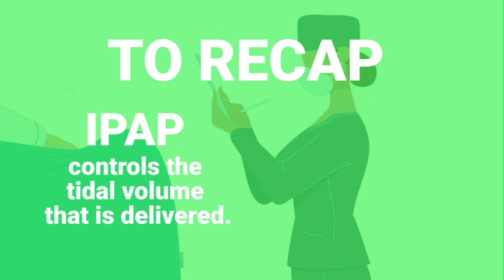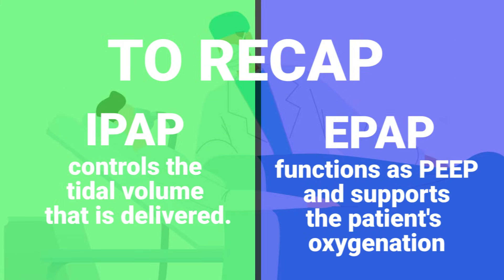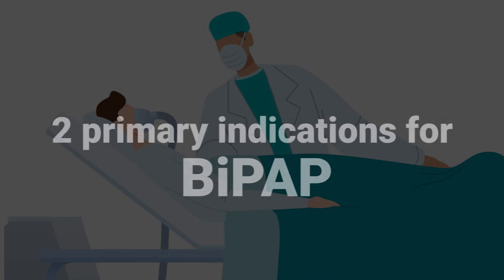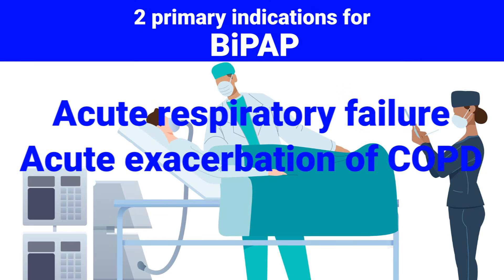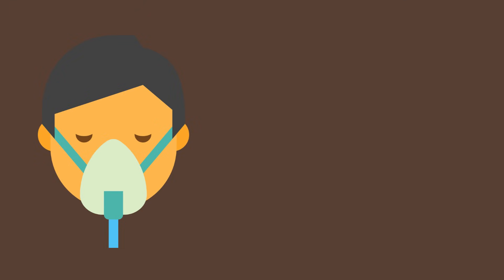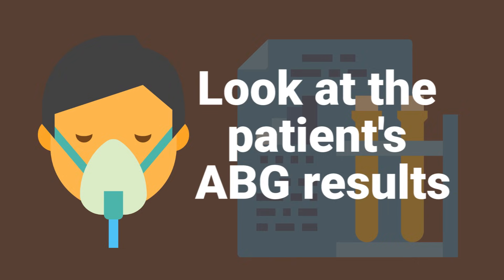Just to recap: IPAP controls the tidal volume that is delivered, and EPAP functions as PEEP and supports the patient's oxygenation. There are two primary indications for BiPAP: acute respiratory failure and an acute exacerbation of COPD. The best way to determine if BiPAP is indicated is to look at the patient's ABG results.